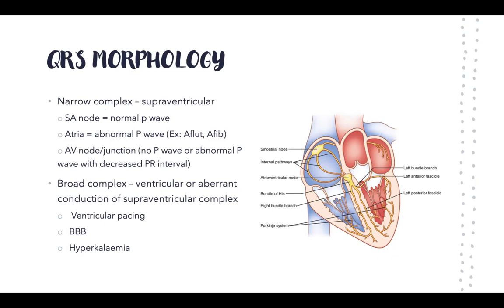If the signal originates from the AV node or junction, it can give no P wave or an abnormal P wave with a decreased PR interval. An example is Wolf-Parkinson-White syndrome, where the membrane depolarizes early and can give a retrograde P wave. We'll cover these in more detail in future sessions on specific arrhythmias.